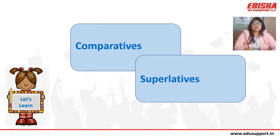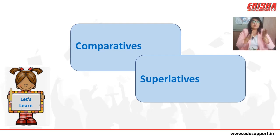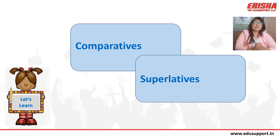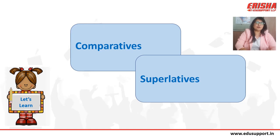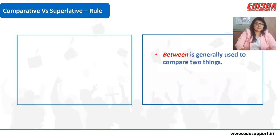The comparative form of an adjective or adverb is used when we are comparing two people, two things, or two actions. The superlative form is used when we are comparing more than two — three, four, or any number greater than two.